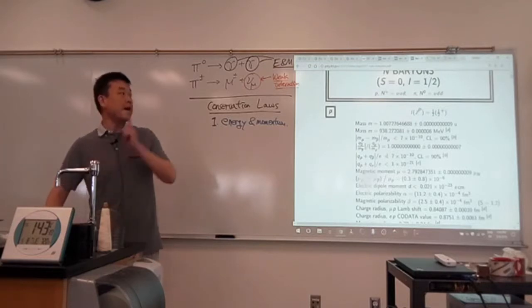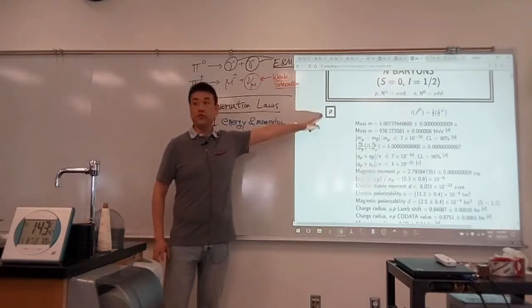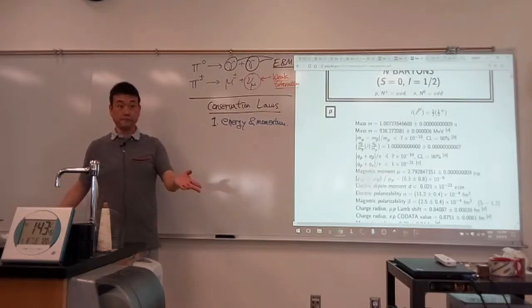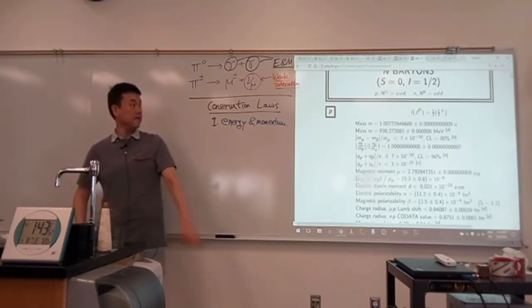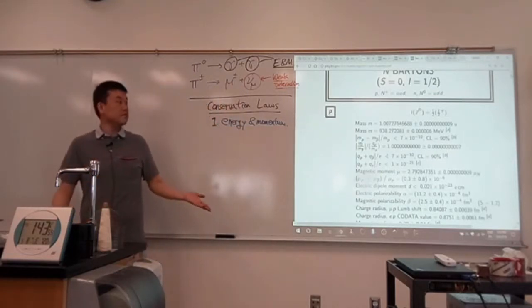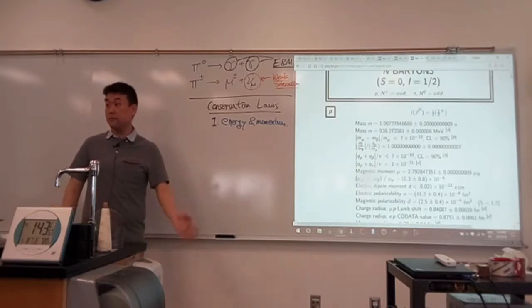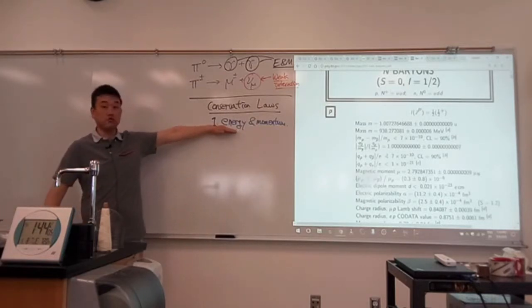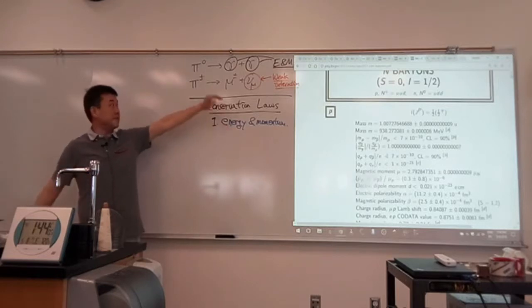So why is it impossible for proton to decay into neutron and positron? Not enough energy, right? If it's decaying in its rest frame, this rest energy is all it has. So it doesn't have enough energy to decay into neutron. But when you look at neutron, neutron has enough energy to decay into proton and electron. So this is one conservation law. And in fact, this can be used to rule out a lot of decay interactions.